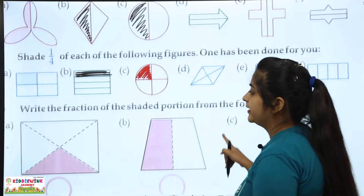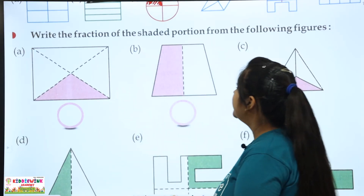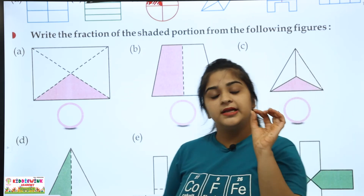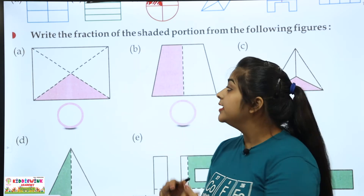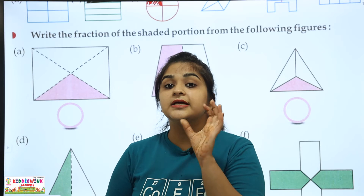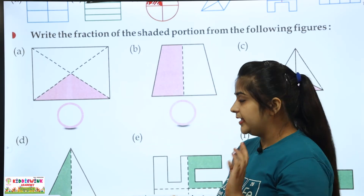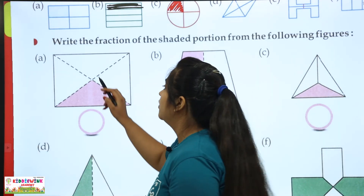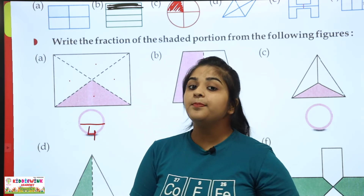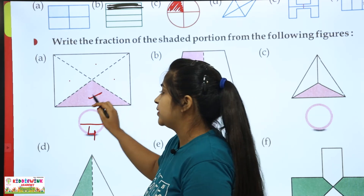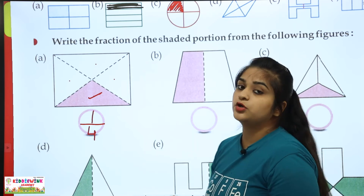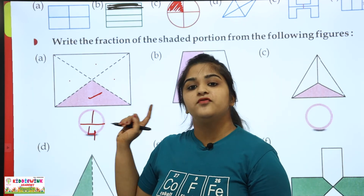Next is: write the fraction of the shaded portion from the following figures. In the first question, you were given the figure with parts already divided. In the second question, the parts are divided and you have to write the fraction showing how much upon how many parts are shaded. Total parts count — how many parts divided: one, two, three, four. Total goes down — we write four. How many parts shaded? Only one. So we write one by four, which is one upon four.